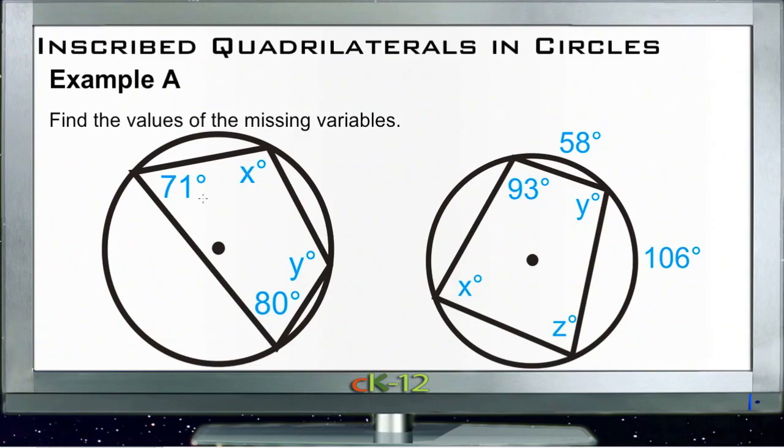Example A in Inscribed Quadrilaterals asks us to find the values of some missing variables. So we have to find the value of the number of degrees here for x, and then y, and then x and y over here, and also z.